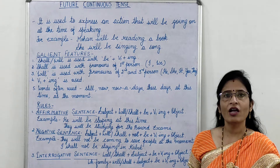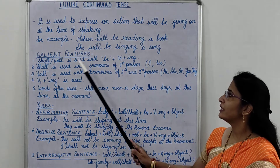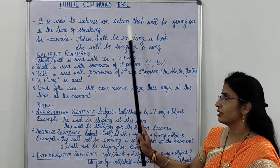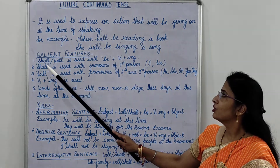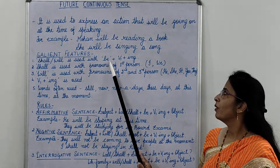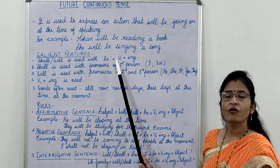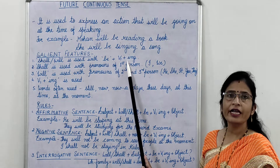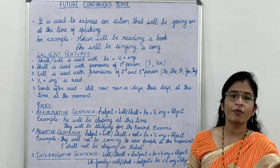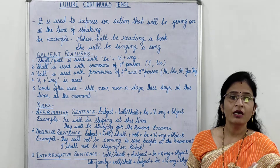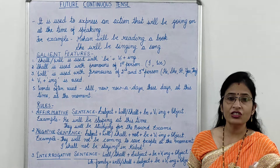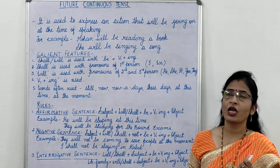Students, now I will tell you about the salient features of Future Continuous Tense. First, shall or will is used with be plus first form of verb plus ing. Shall या will का प्रयोग be plus verb की first form plus ing के साथ होता है।